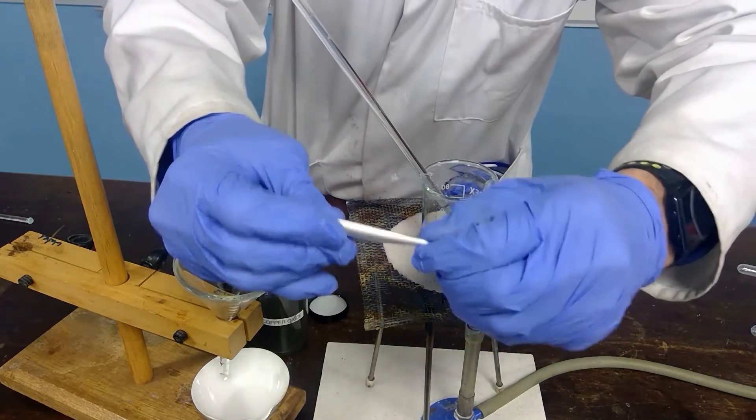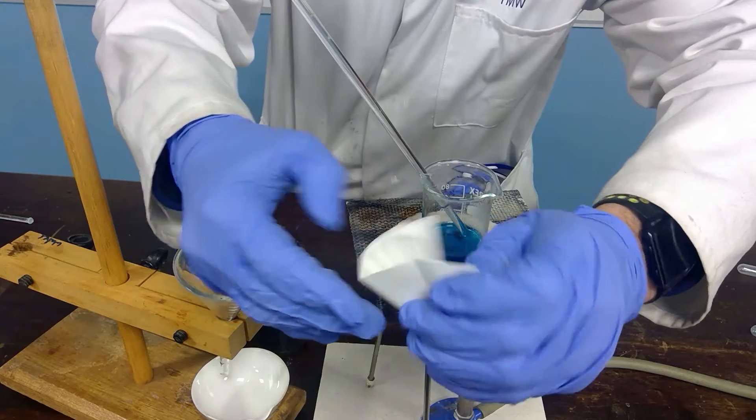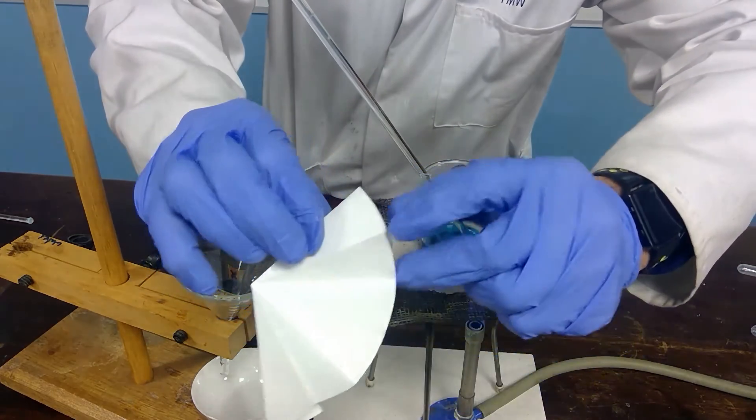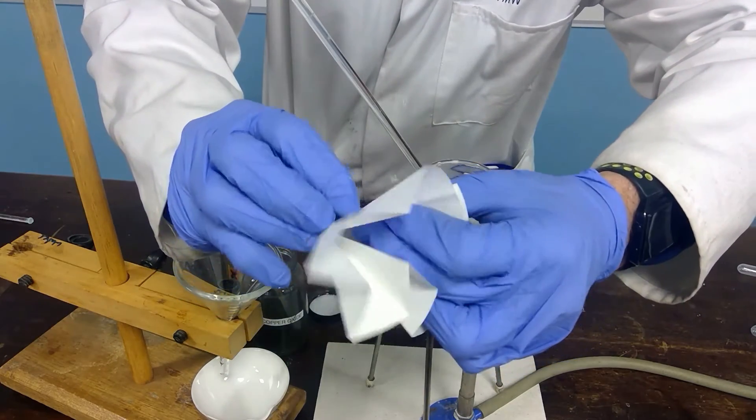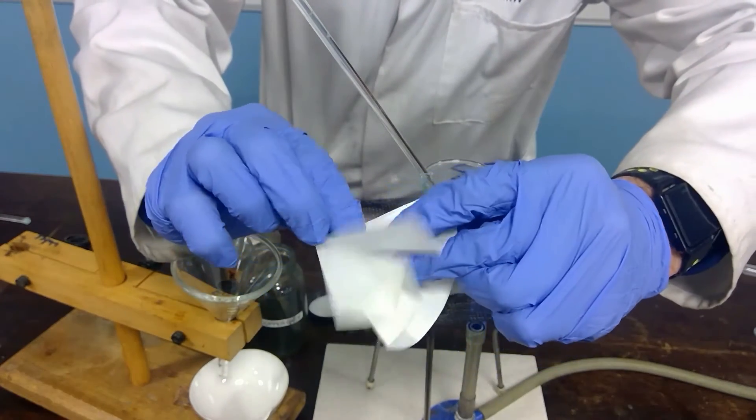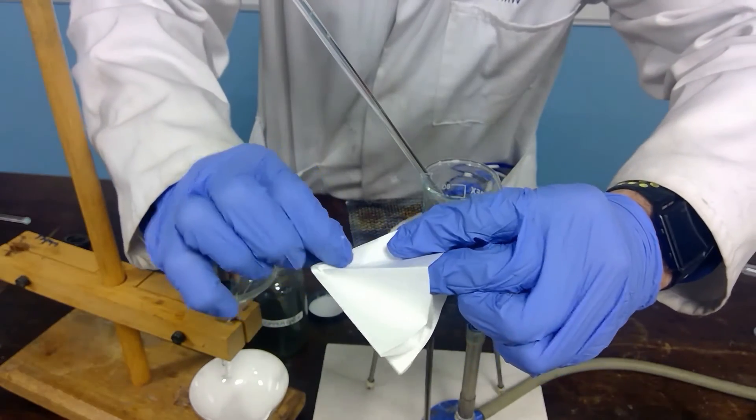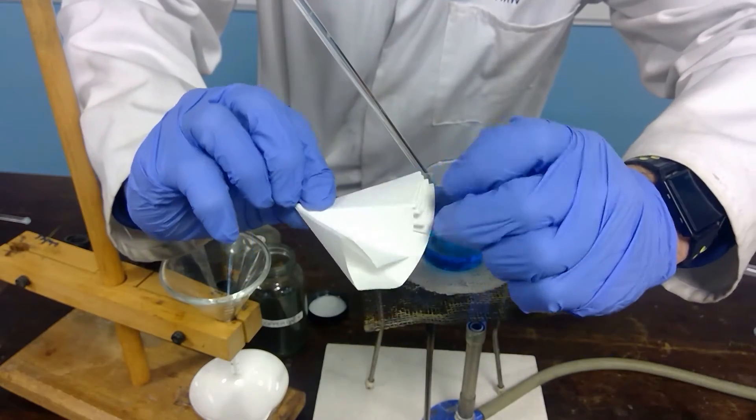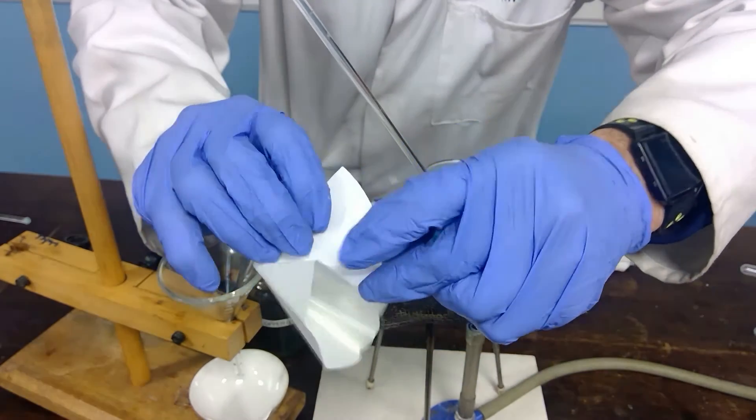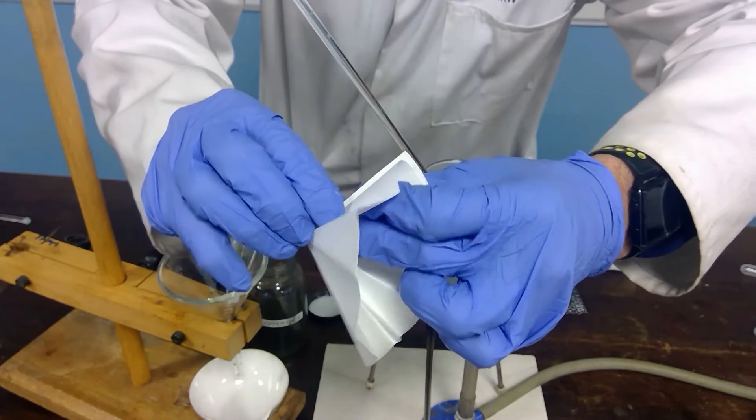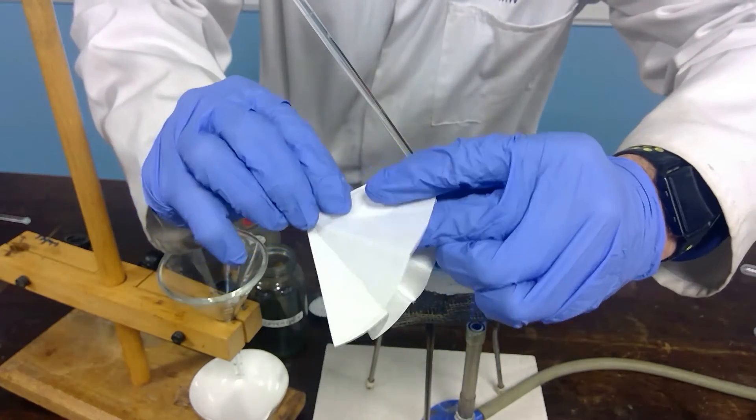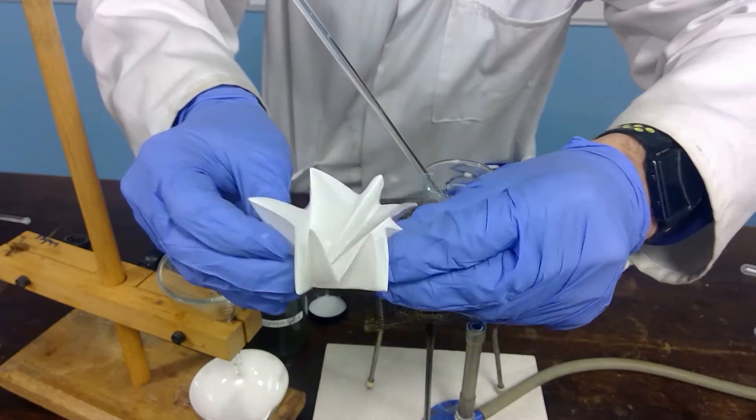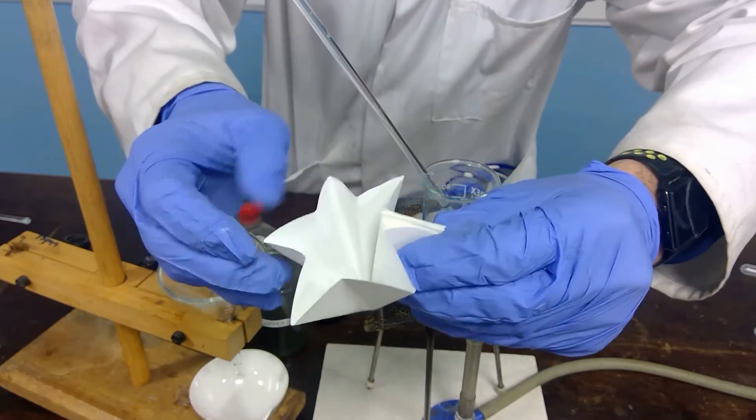Once we have done that we can open it up and start to fold backwards and forwards from a particular point. We just pinch and we fold backwards and forwards. And you get to a certain point and then open up a little and continue until eventually you're all the way around the filter paper. So you have the fluted filter paper.